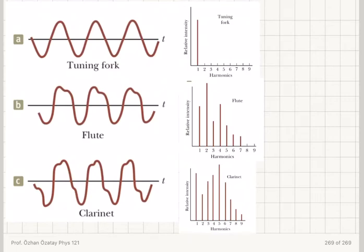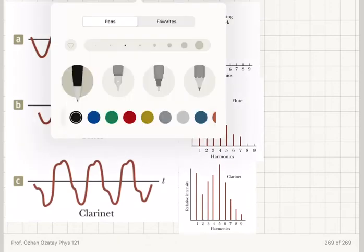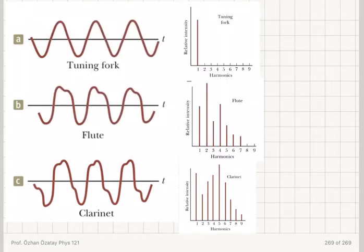Because if you look at the actual waveform that they're producing, you can see the tuning fork produces a purely sinusoidal wave. The flute and clarinet waves are non-sinusoidal in the sense that if you look at their Fourier spectrum...